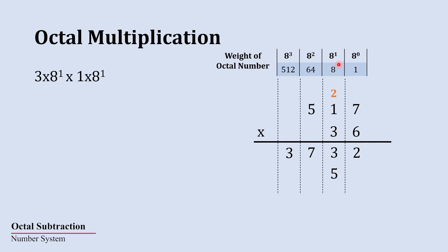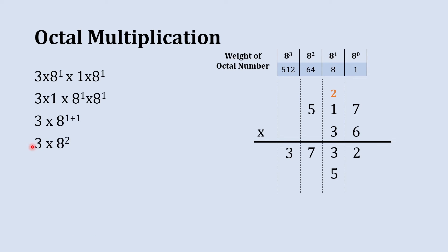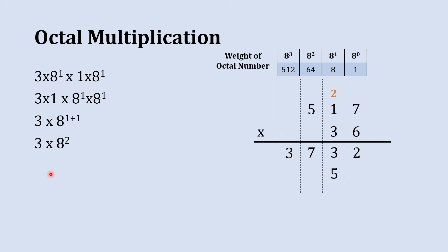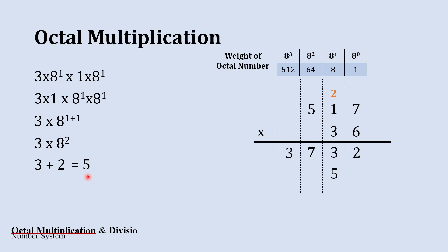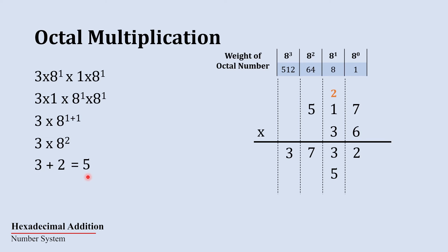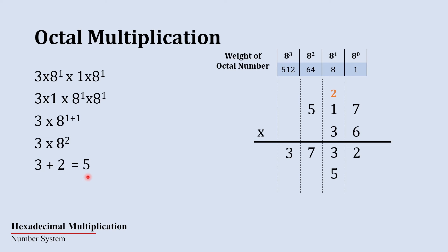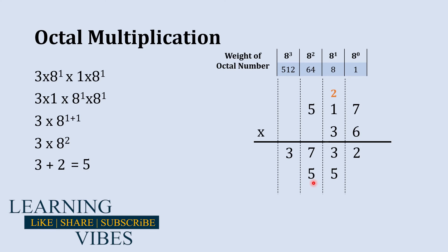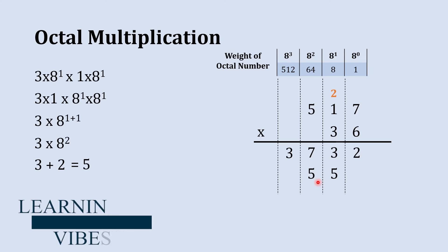When this 3, which has a weight of 8 raise to 1, gets multiplied with 1, which has a weight of 8 raise to 1, their multiplication will be 3 and the multiplication of their weights is 8 raise to 2. Now we have 2 as carry, so we add this 2 into 3 to get 5 as the final result. Here this 5 is less than 8, and whenever a digit is less than 8 its octal and decimal equivalents are the same, so no conversion is needed. The place value of this 5 is 8 raise to 2, so we write it there.